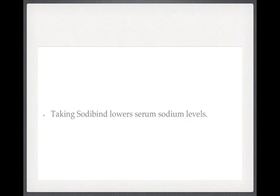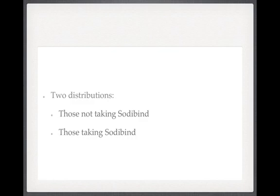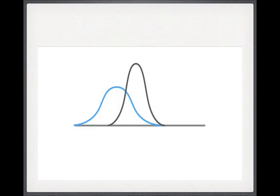The question is: how do we test this hypothesis? Let's think about two distributions. The first is the distribution of sodium levels in healthy individuals not taking Sodibind — just healthy people in the general population. The second is the distribution of sodium levels in those taking Sodibind. If we could work out both distributions, we'd be able to get our answer — just look at whether the Sodibind distribution is lower. We could use a measure of central tendency like the mean. If the blue distribution here was the Sodibind distribution and the grey was the general population, it would look like Sodibind works.